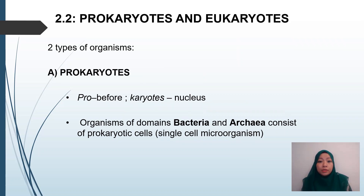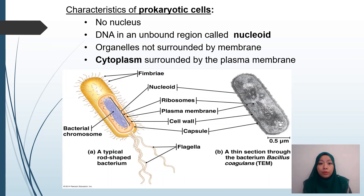There are two types of organisms: prokaryotes and eukaryotes. The word 'pro' means before, and 'karyotes' refers to nucleus, so prokaryotes do not have a nucleus. Organisms of domain Bacteria and Archaea consist of prokaryotic cells, and they are single-celled microorganisms. The prokaryotic cells do not have a nucleus; they only have the nucleoid region, where DNA is located in an unbound region called the nucleoid.